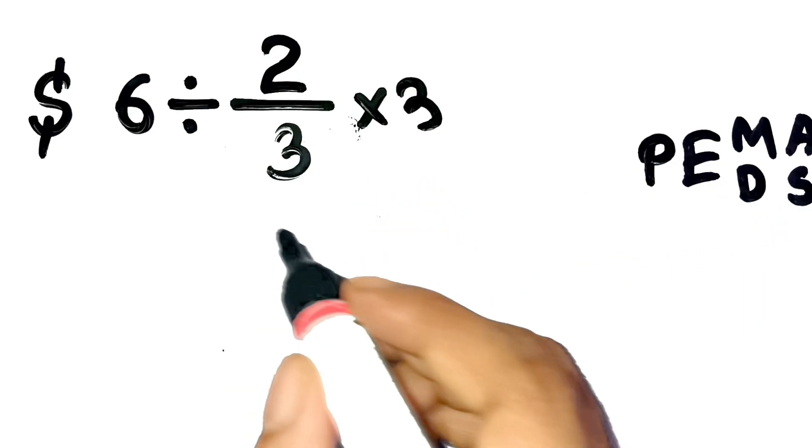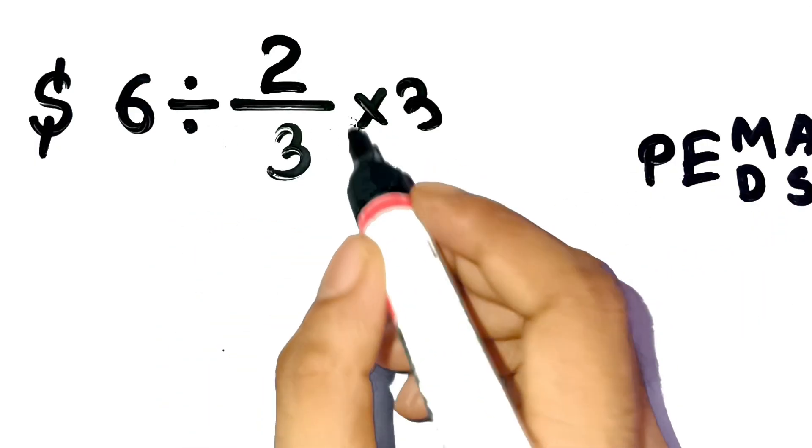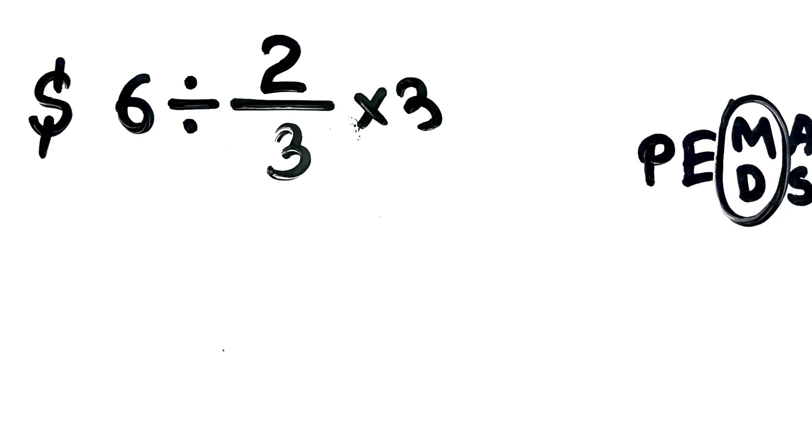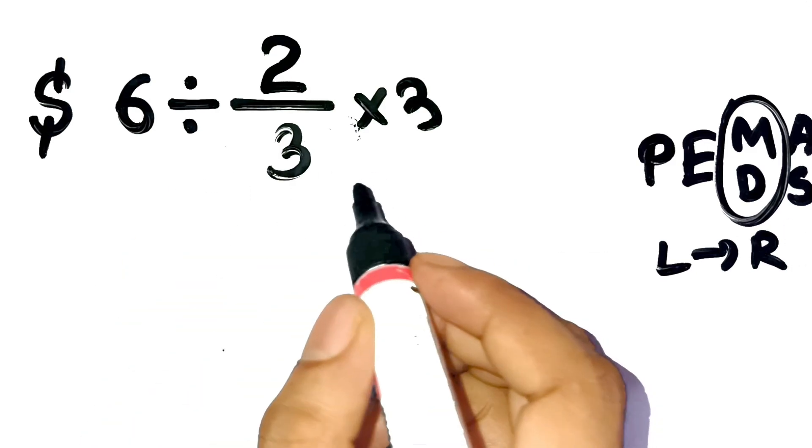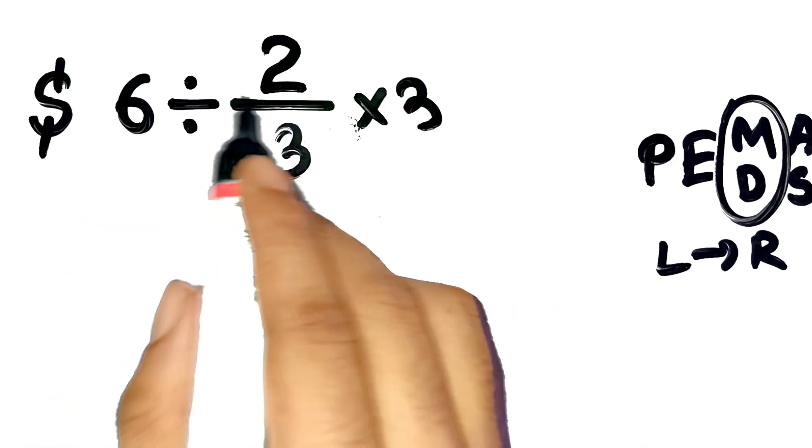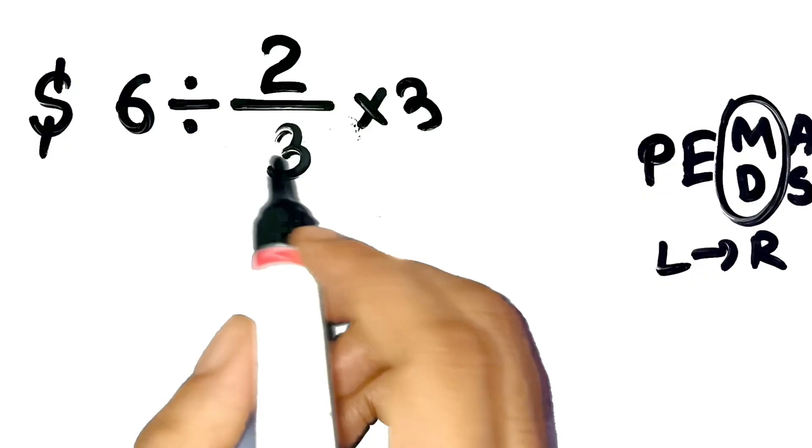Next, we move to multiplication and division. And here's the key. Multiplication and division have equal priority. That means you go from left to right, not one before the other. So, starting left to right, we take 6 divided by 2 thirds first.